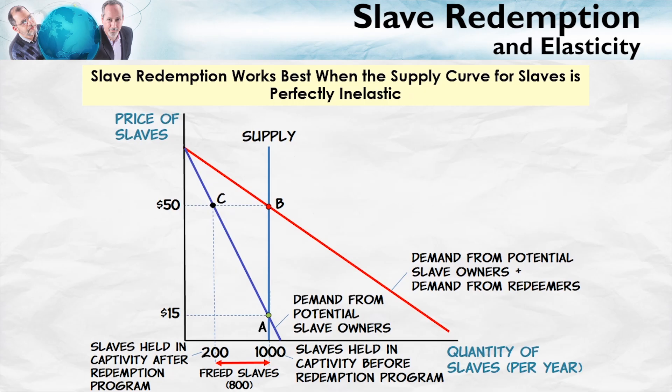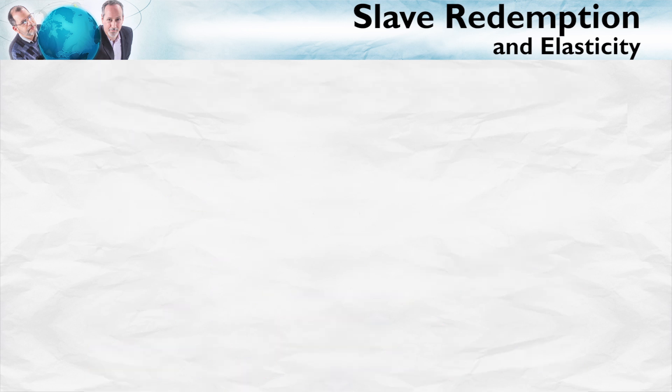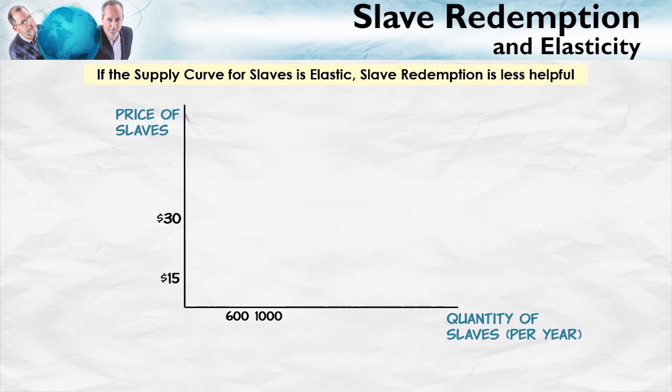What we're going to see in a minute is that when the supply curve is more elastic, that's not the case. When the supply curve is more elastic, the redemption program itself can increase the number of people who are enslaved, at least for a period of time. So let's take a look now at the case where the supply curve is more elastic.